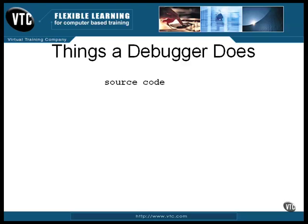When working with higher level languages, providing the source code to the debugger is important because you want to be shown where in the source code you are when you look at the values.